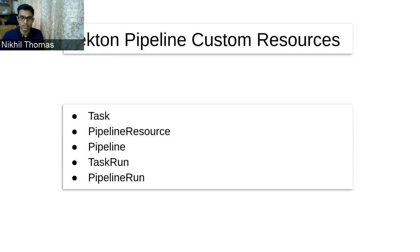These are the main CRDs powered by Tekton Pipelines: Task, Pipeline Resource, Pipeline, Task Run, and Pipeline Run. I will talk more about them during the demo.